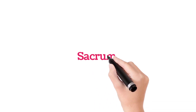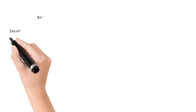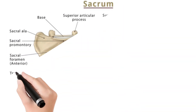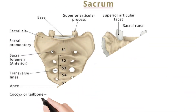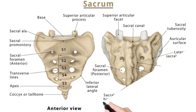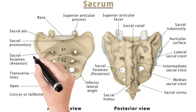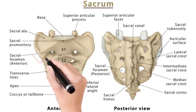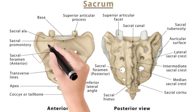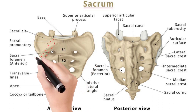Dear friends, today we are going to discuss about the sacrum. As you may be aware, the sacrum is formed by the fusion of five vertebrae, that is S1 to S5.